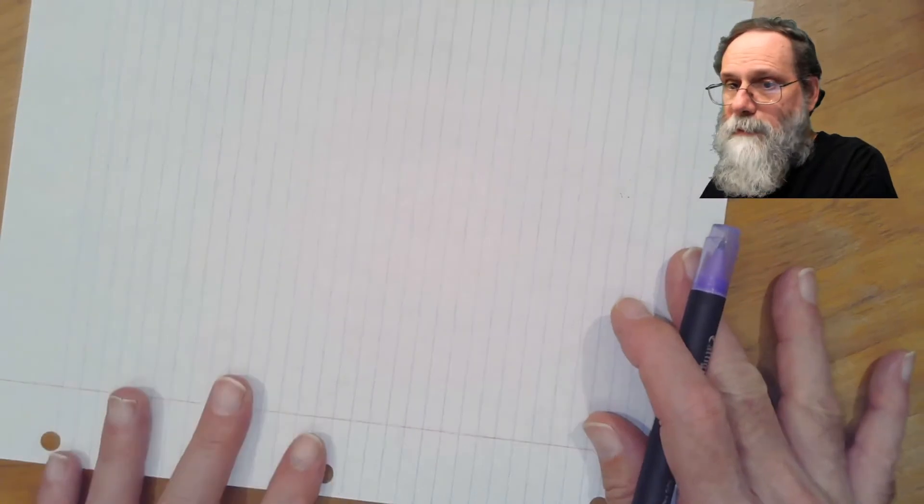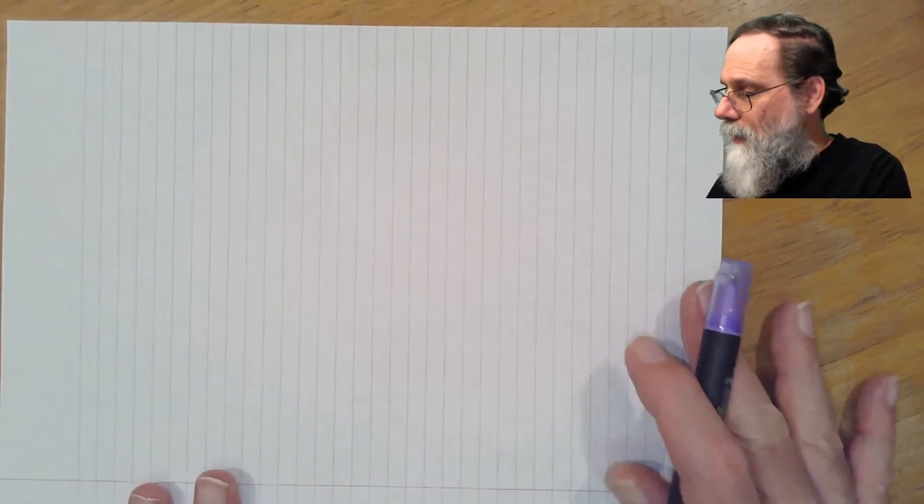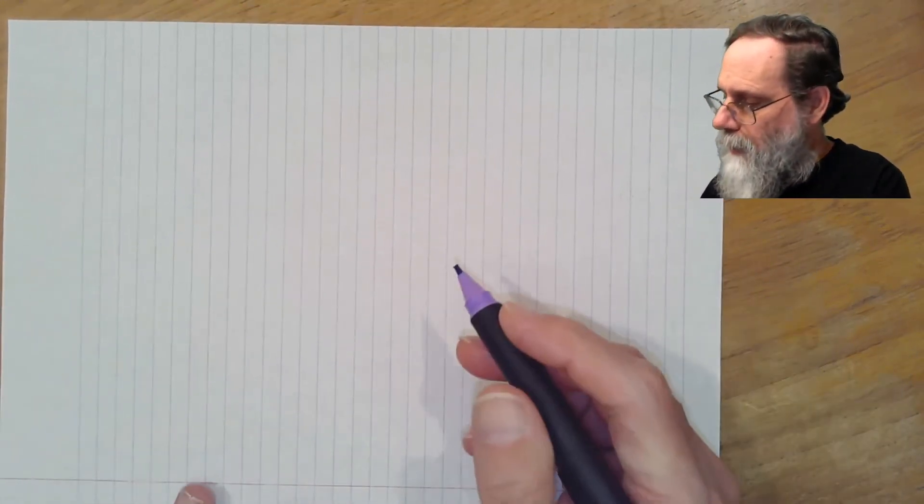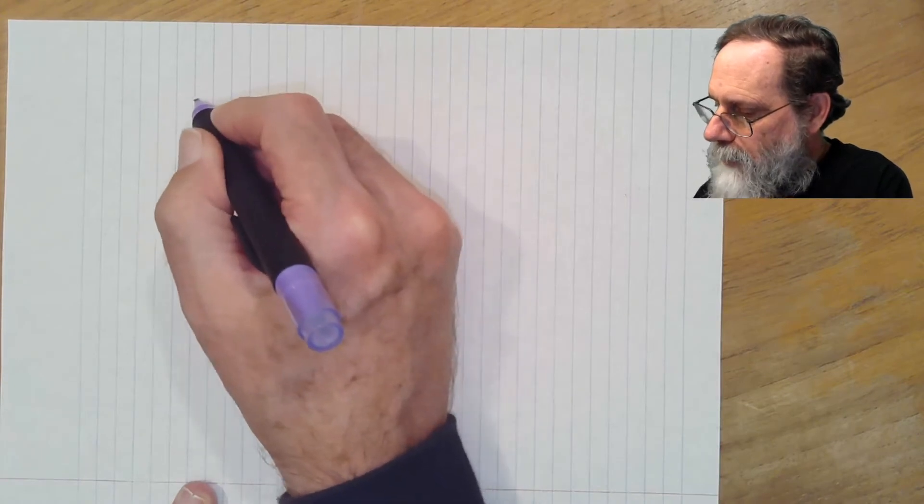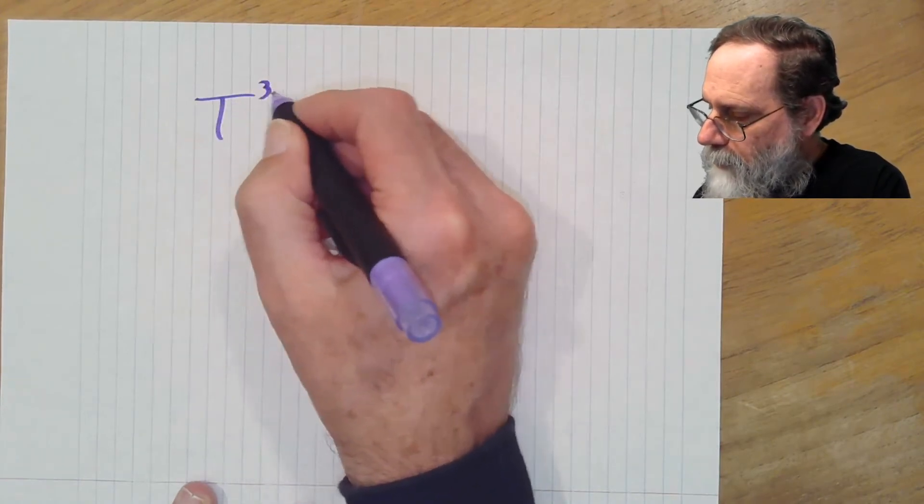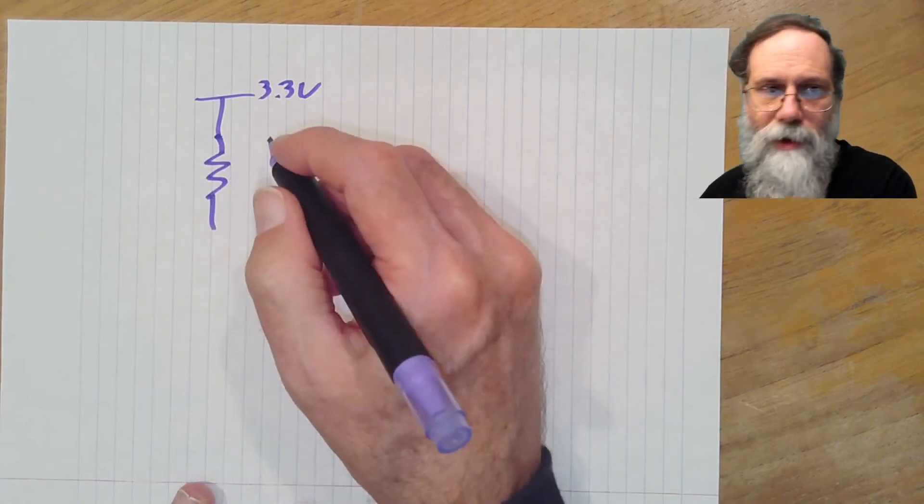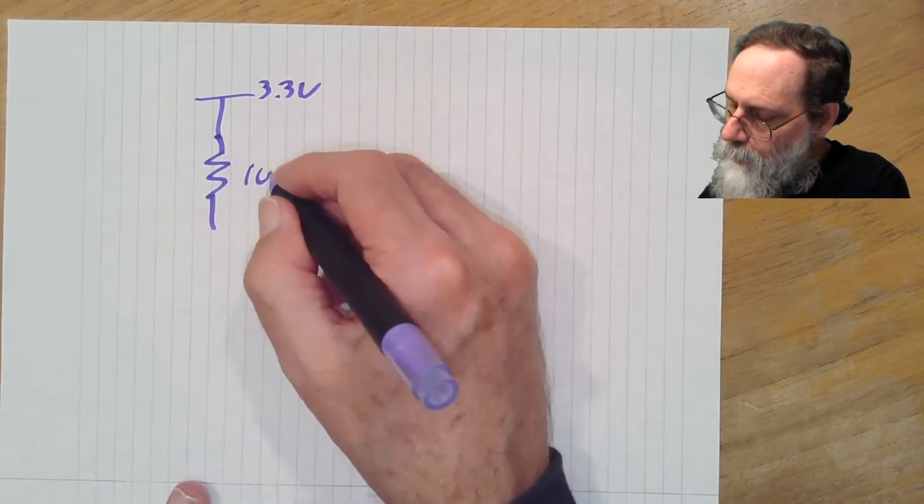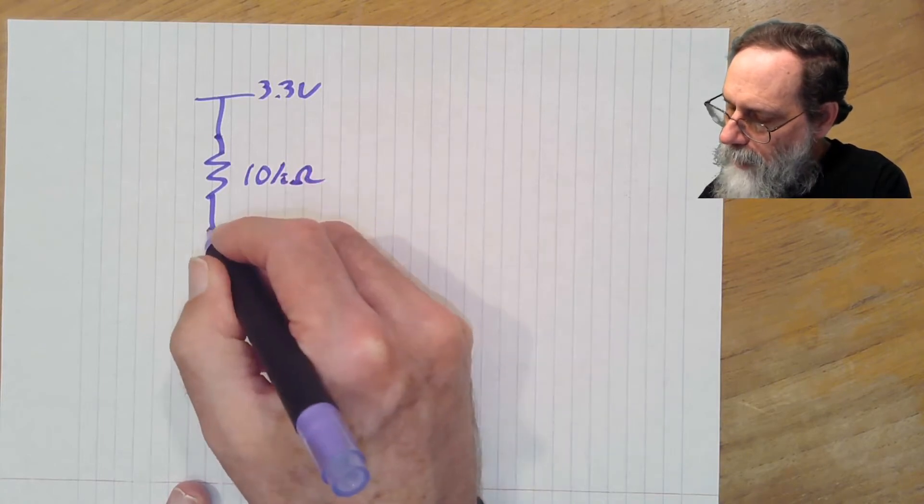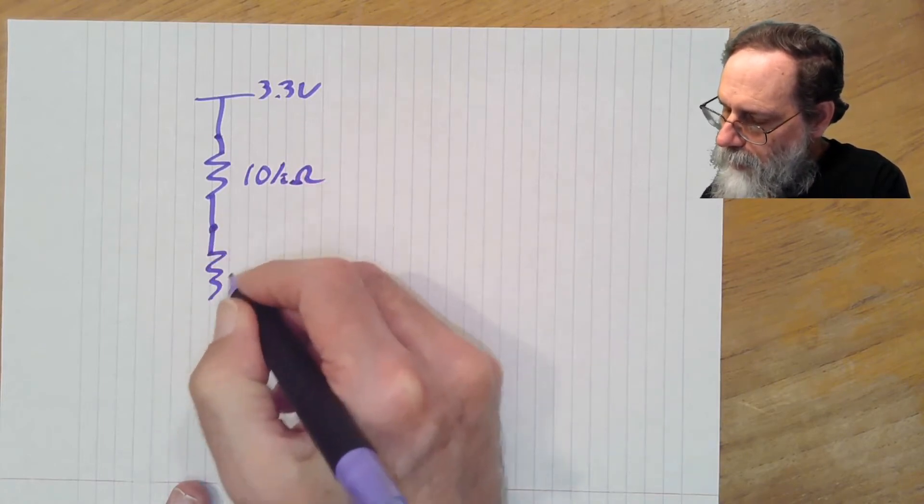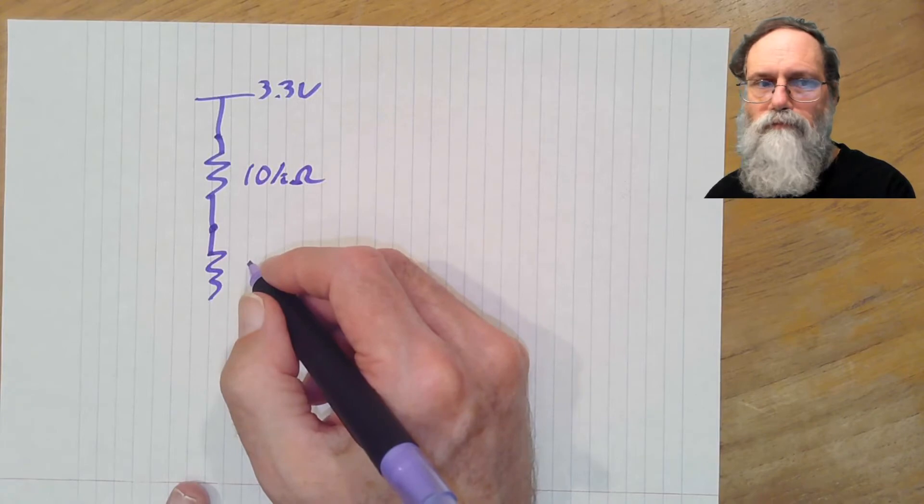So let's try a concrete example here with some actual numbers. Let's say that our input is 3.3 volts. And then the upper resistor here, let's make it 10 kilo ohms. And the lower resistor here, let's make it 22 kilo ohms.